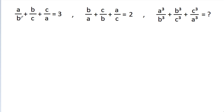We have given that a/b + b/c + c/a is equal to 3, and b/a + c/b + a/c is equal to 2. Then a³/b³ + b³/c³ + c³/a³ is equal to what?